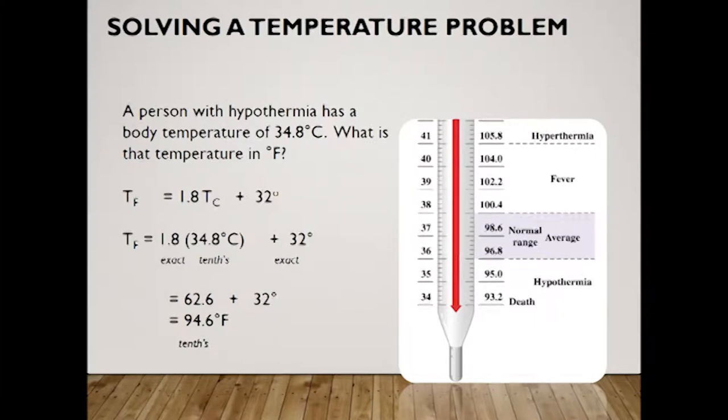Think about another situation. A person with hypothermia has a body temperature of 34.8 Celsius. What's the temperature in Fahrenheit? If you did the equation, you're gonna see Fahrenheit to be 94.6 degrees Fahrenheit. Hypothermia is a very serious situation where the body temperature is below average.